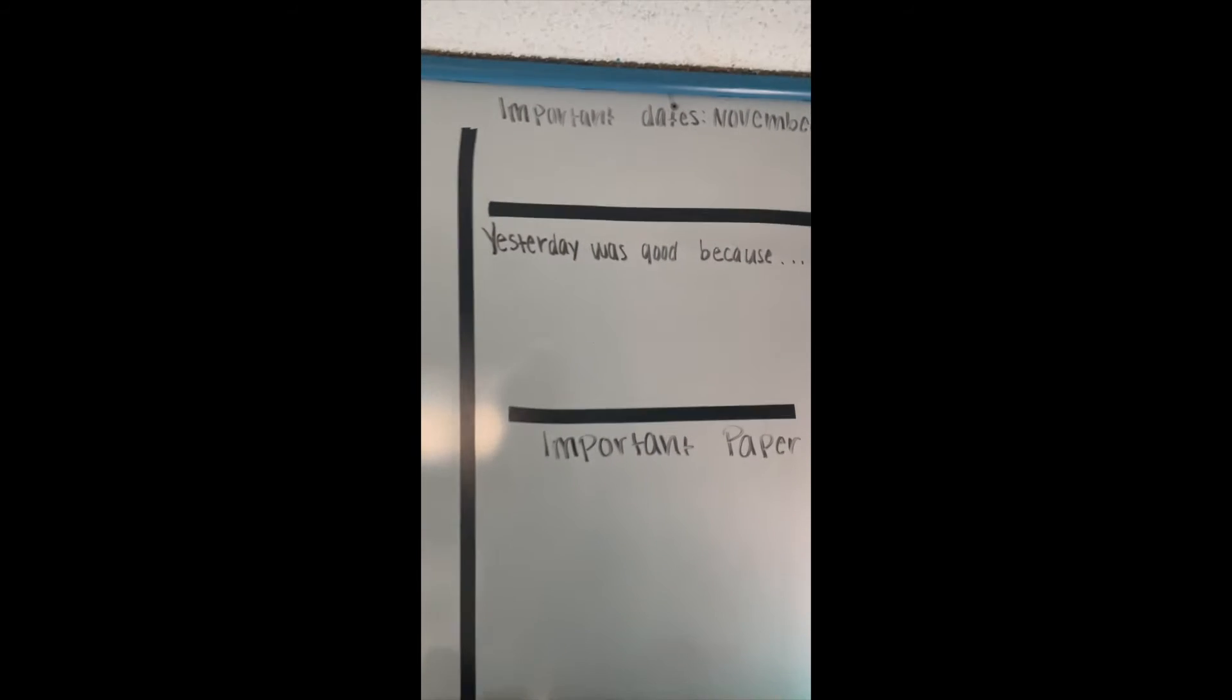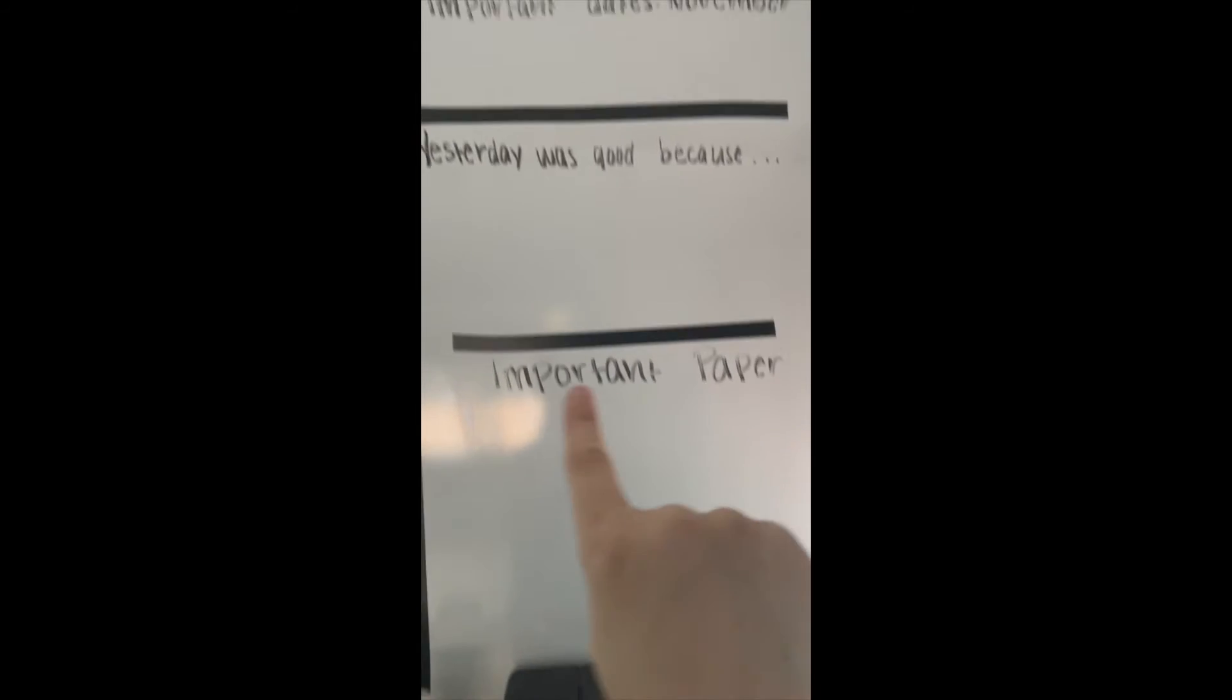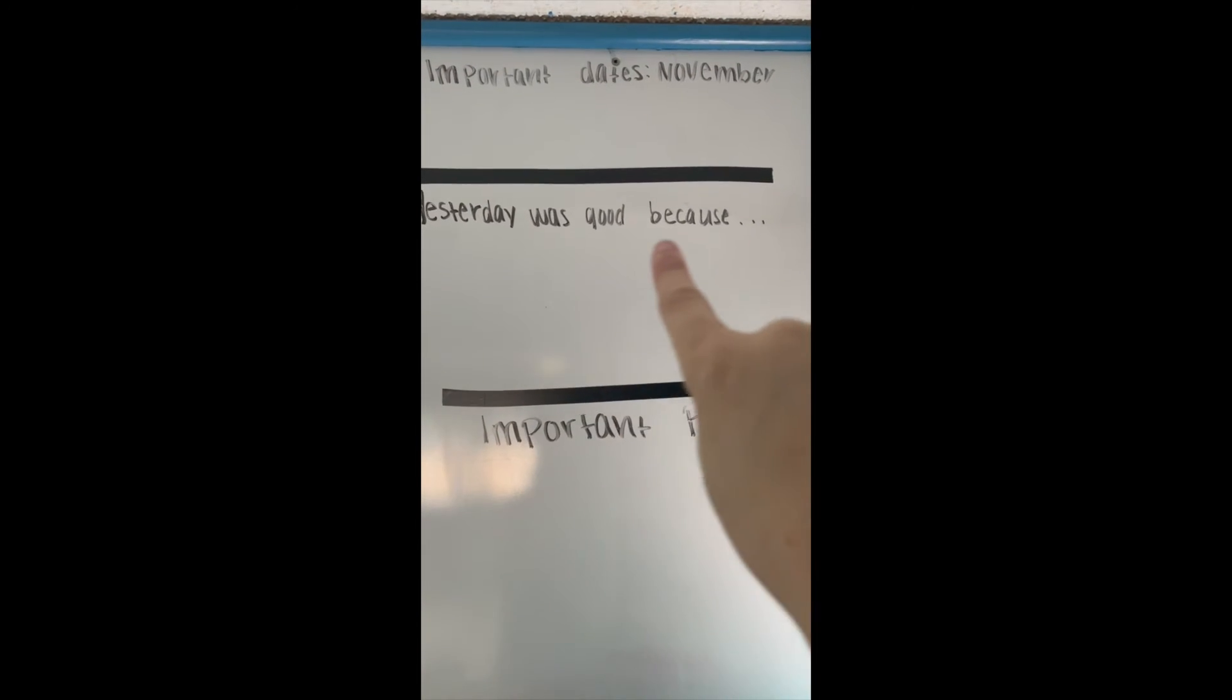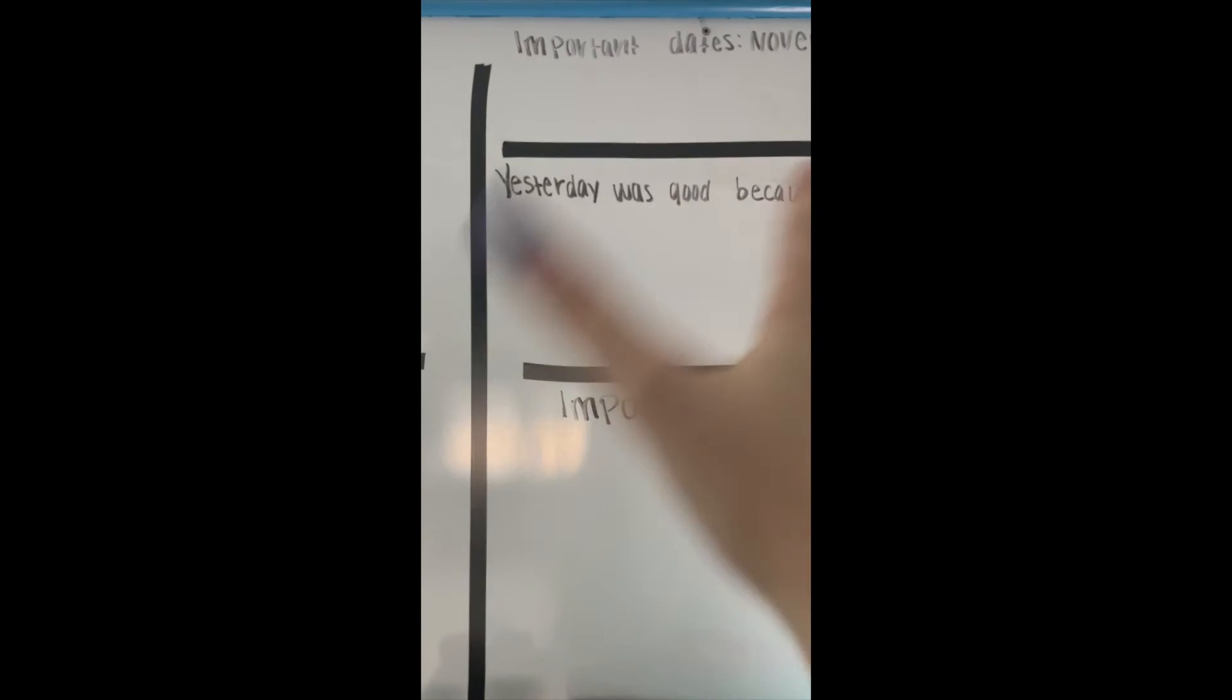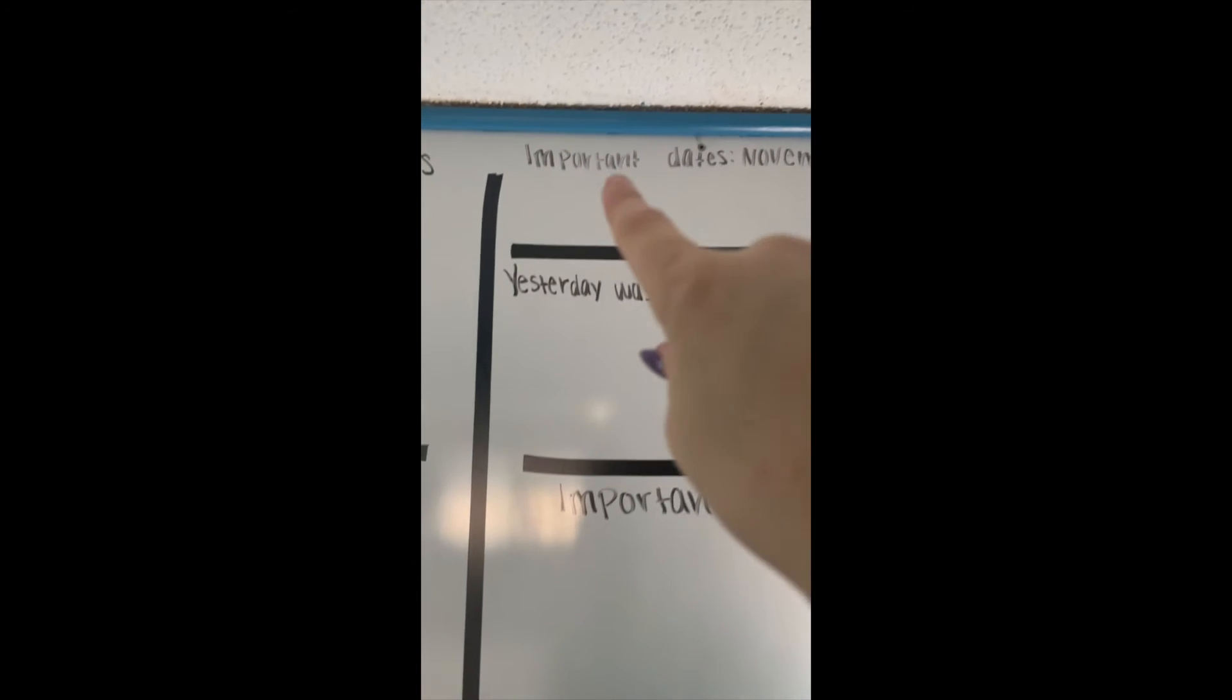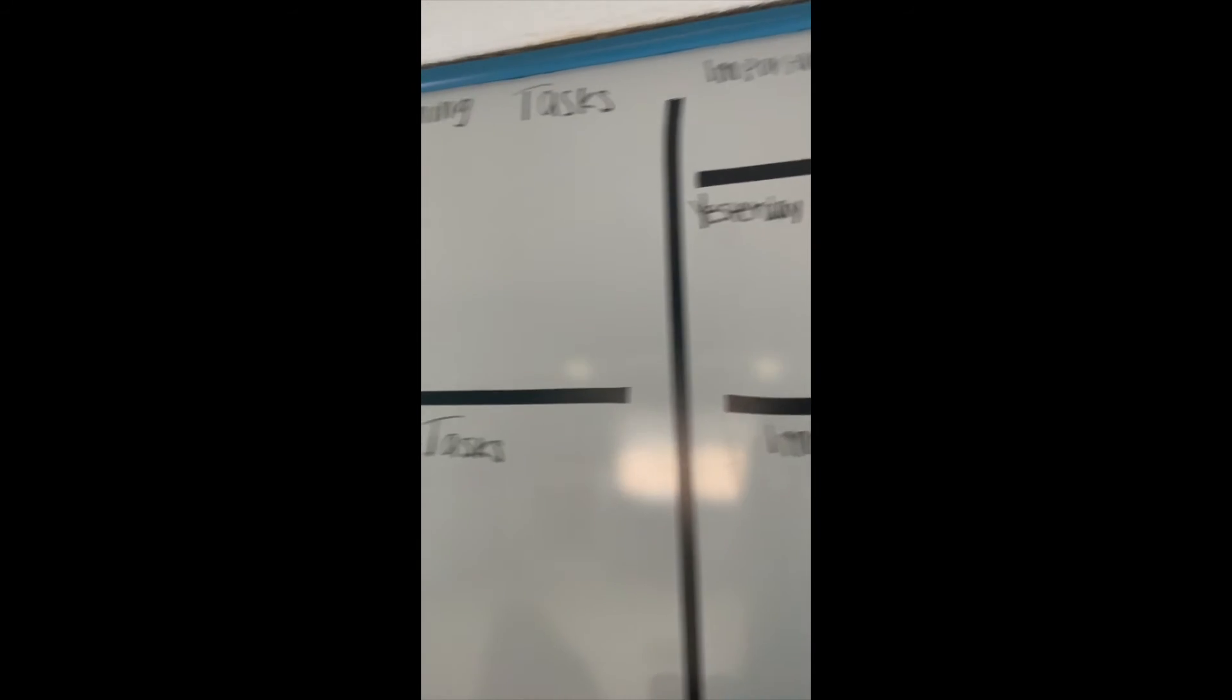And over here, I've divided this into three sections. I have my important papers down here and then I'm going to have a yesterday was good because I'm going to fill it out in the mornings. I'm going to just put, why was yesterday good? And so I can look at that. And then I have important dates for the month. This month is November, which is why it's November. So now I'm just going to fill this out.